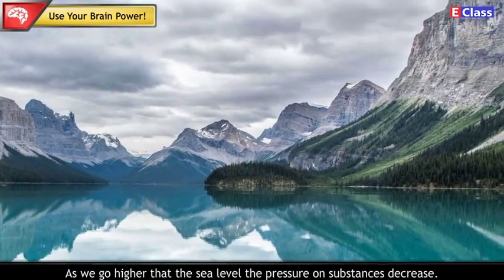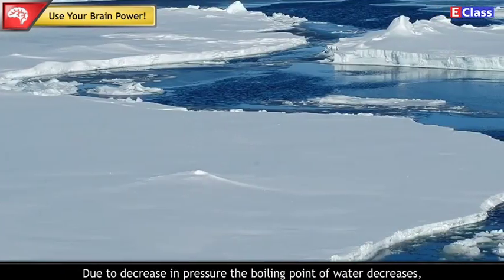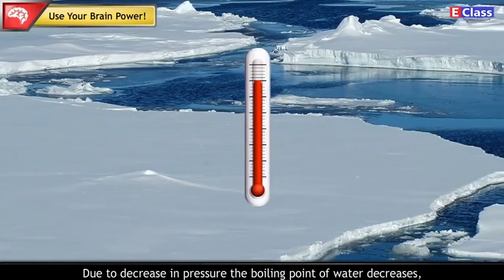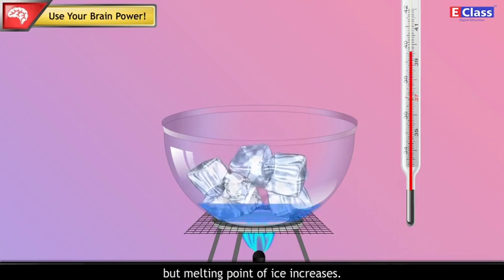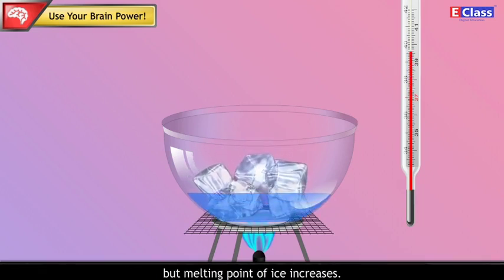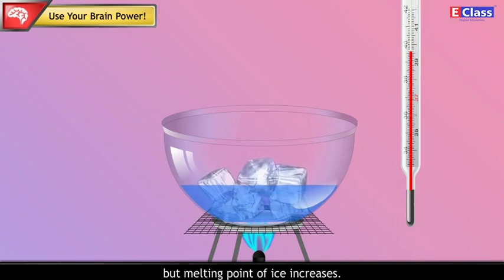Answer: As we go higher than the sea level, the pressure on substances decrease. Due to decrease in pressure, the boiling point of water decreases, but melting point of ice increases. But the melting point of most of the substances increases by increasing the pressure.